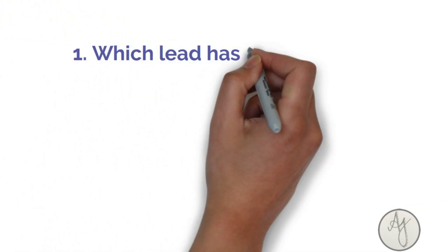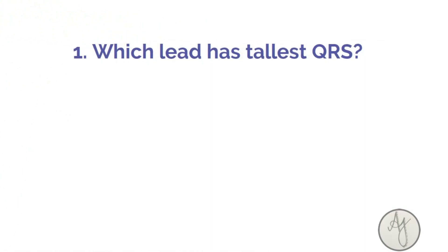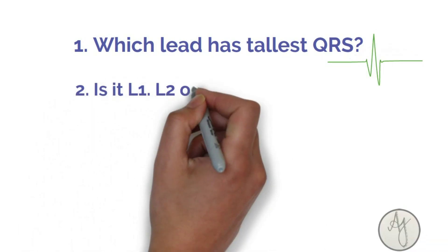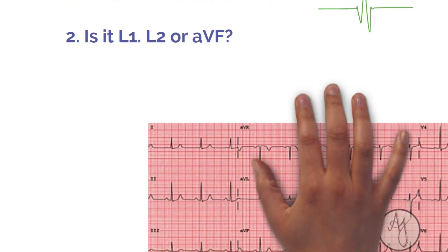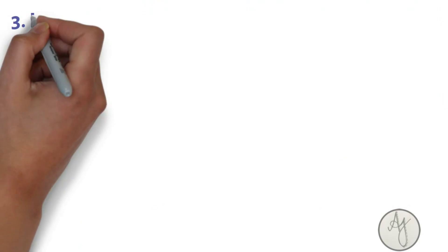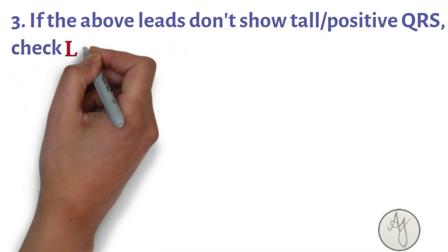When time permits, do a simple five-step check to determine the axis. This is also called the scientific method of determining the axis. Number one: check which lead has the tallest QRS. If L1, L2, or aVF have the tallest QRS, it's a normal axis. If these leads don't show the tallest, check L3 and aVL.